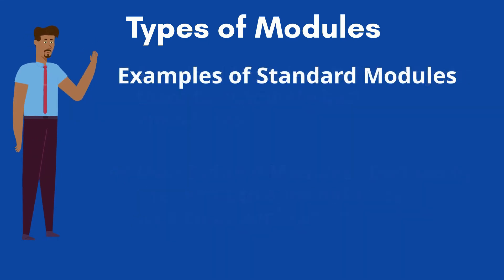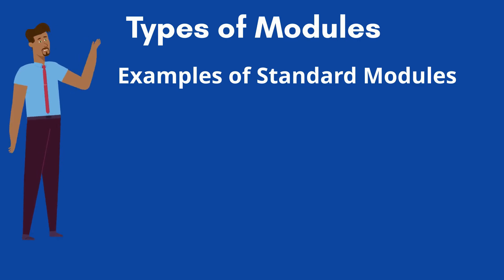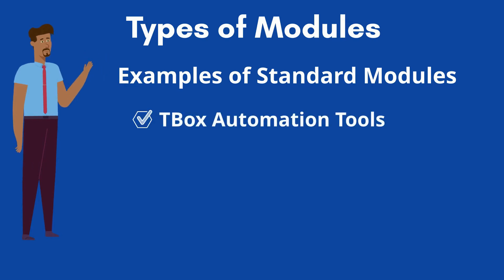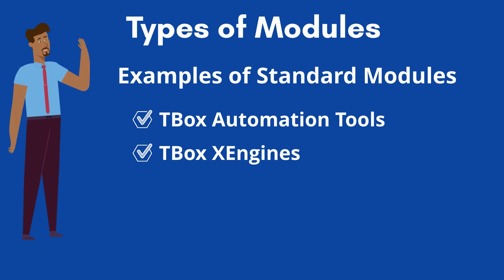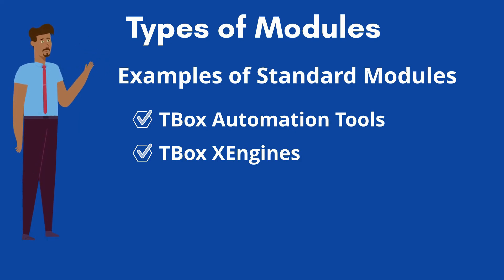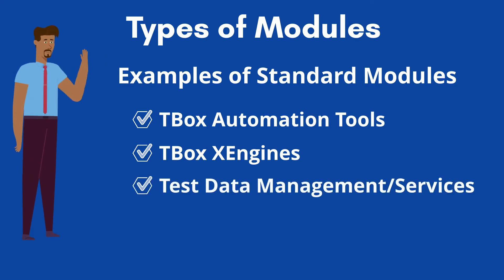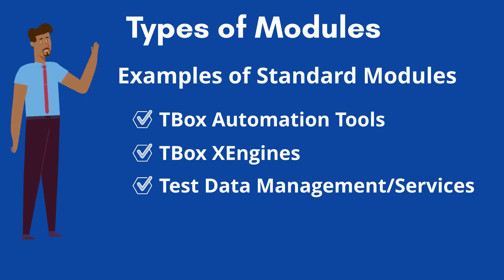Let's see the most commonly used standard modules. Based on the usage, we can group the standard modules into three categories. Tbox automation tools, which are used to perform basic operations such as basic windows, buffer, file folder, string, date time, process, and resource handling. Tbox X-Engine modules are used to perform basic operations in different applications such as database, HTML, PDF, .NET, SAP, and mobile. Test data related modules are used to manage test data through features such as test data management and test data services. These are the frequently used standard modules for any test automations.